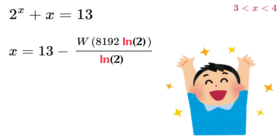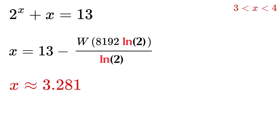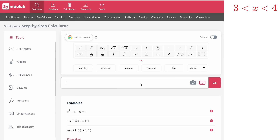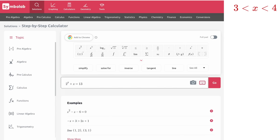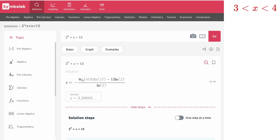And we are done. You can either leave this expression as is, or we can find the approximate value of x, which turns out to be around 3.281. Now let us verify this by putting it into an online calculator — and look, we got the same result.